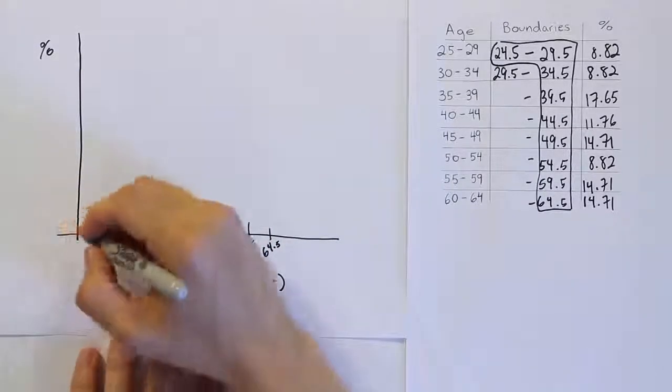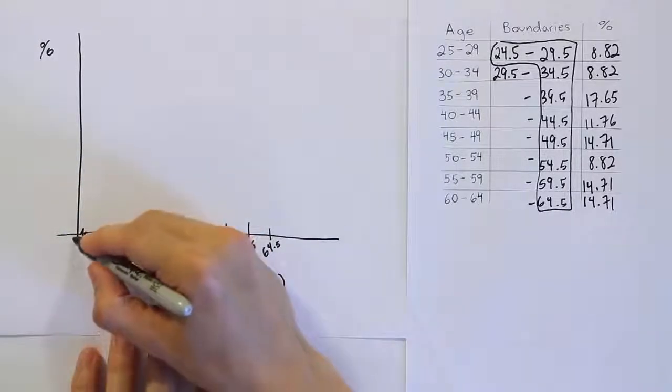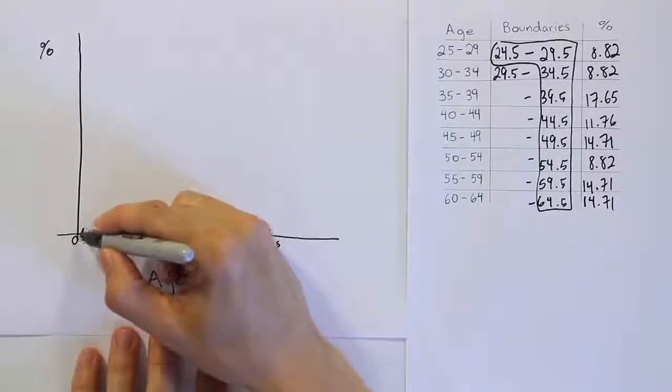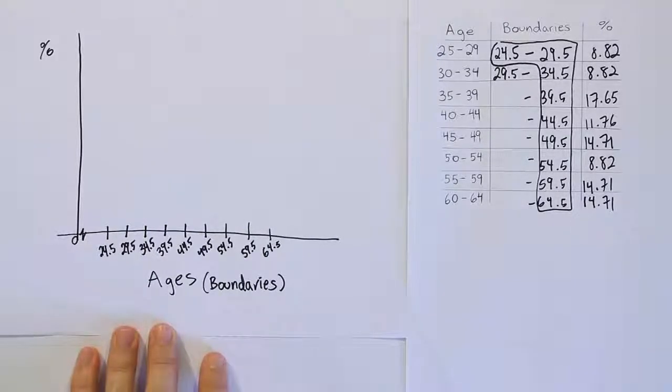Sometimes people will put like a little, almost like a cardiac symbol there that's to say that this is supposed to be zero, the origin. And we obviously have chopped off some numbers to get all the way to 24.5 so quickly. So you can put that little mark there to indicate some of the number line has been removed to make the drawing look better.